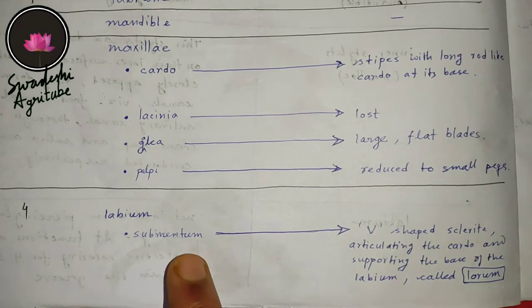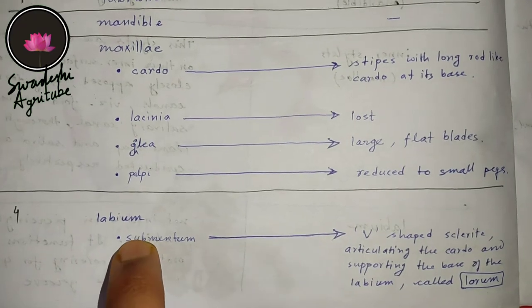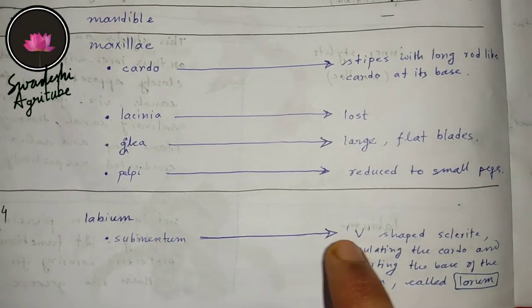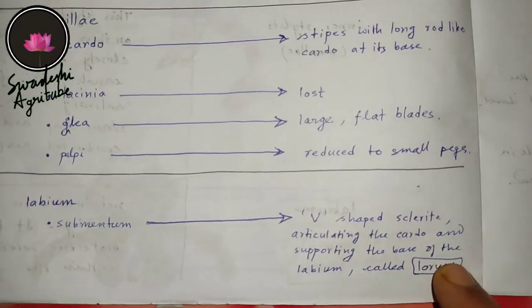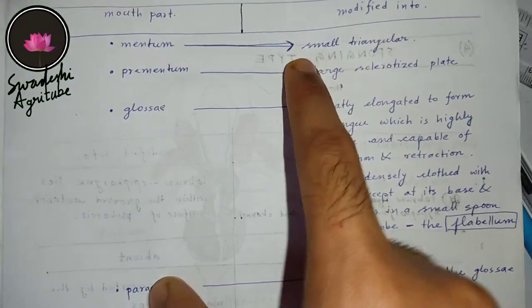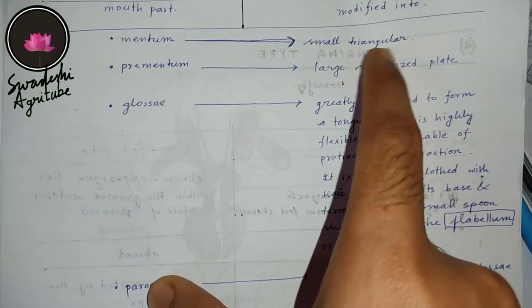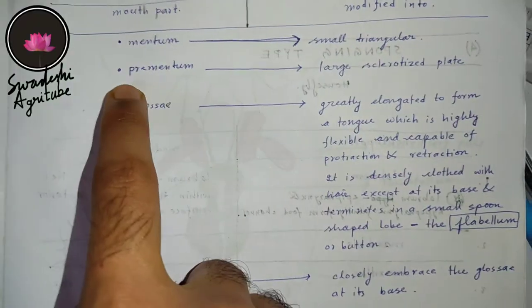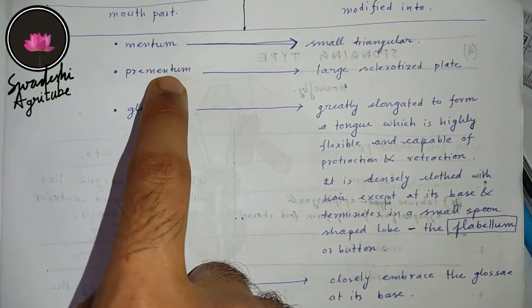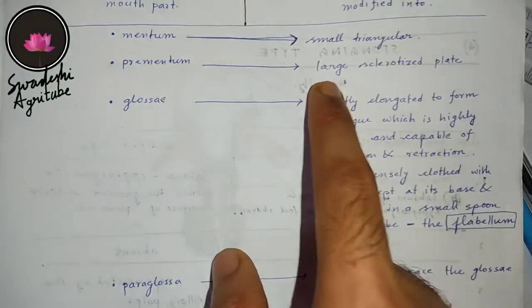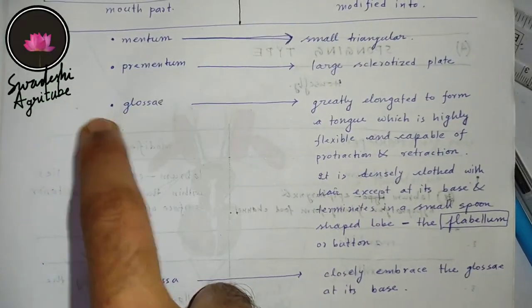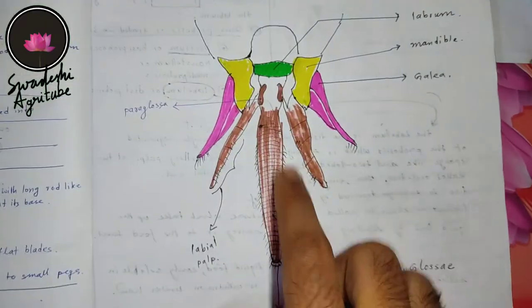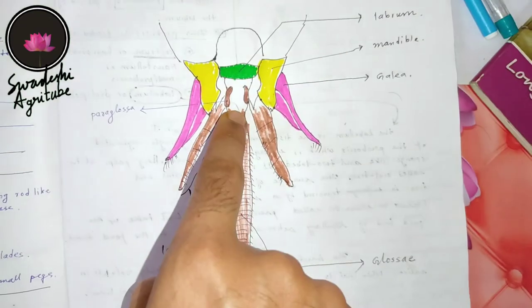In chewing and lapping type of mouth parts, the submentum becomes V-shaped and is called lorum. The mentum changes into a smaller structure. The prementum becomes large.